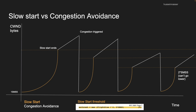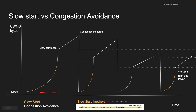Here's the chart for slow start versus congestion avoidance. On the y-axis we have the number of bytes for the congestion window, starting from one MSS. The x-axis is time. I copied this from RFC page seven. The orange represents slow start — exponential growth. The white represents congestion avoidance — linear growth. The dotted lines are the slow start thresholds, and you can see they decrease over time. We increase the window until we hit the threshold, then flip the algorithm.